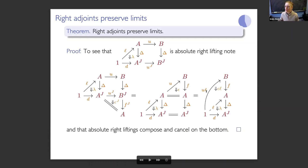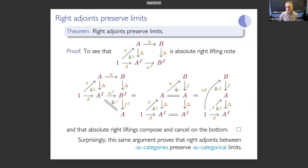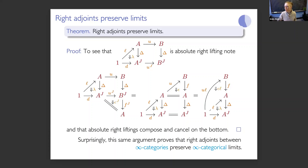This is a proof of the classical theorem in ordinary category theory that right adjoints preserve limits. And what's really surprising to people working in homotopically inflected infinite dimensional category theory is that this very same argument — exactly the one I've just presented, working in some strict two-category — proves the corresponding theorem for infinity categories. Even though infinity categories have infinite dimensions of coherence data and very complicated definitions spread between models, this proof is the proof that right adjoints between infinity categories preserve infinity categorical limits.